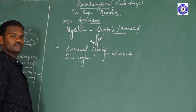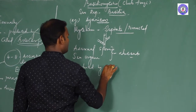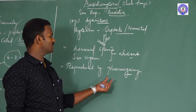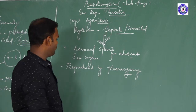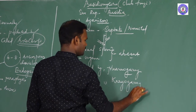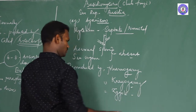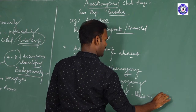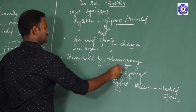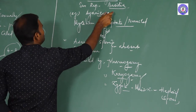Basidiomycetes reproduce by plasmogamy — fusion of cytoplasm of two compatible, different strains — followed by karyogamy, which is the fusion of two nuclei. Zygote formation occurs, and the zygote undergoes meiosis to produce haploid spores. This karyogamy and meiotic division takes place within a club-shaped structure called the basidium.